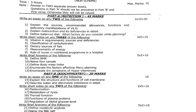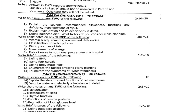In Nutrition, the first essay question is: explain the sources, recommended allowances, functions, and deficiency manifestations of Vitamin D. Second question: explain malnutrition and its deficiencies in detail. Third question: define balanced diet and what factors do you consider while planning a balanced diet. All these questions carry 10 marks; answer any two — 2 × 10 = 20 marks.